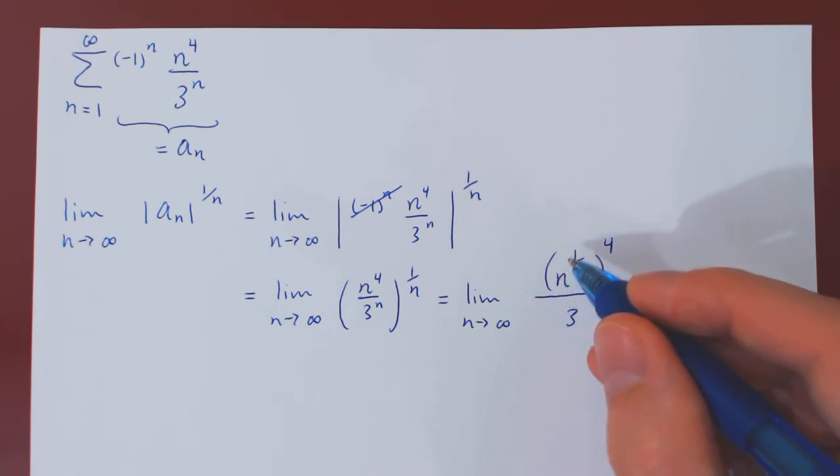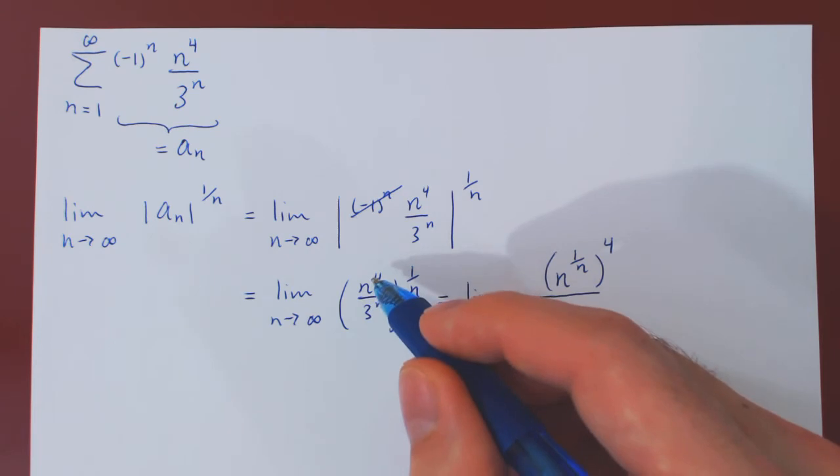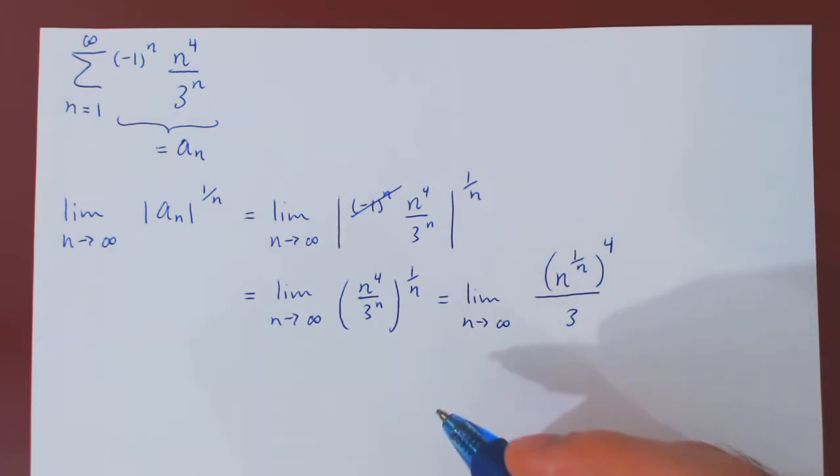So this is n to the 1 over n times 4, so n to the 4 over n. This is n to the 4 to the 1 over n, so n to the 4 times 1 over n, n to the 4 over n. So it's the same thing.